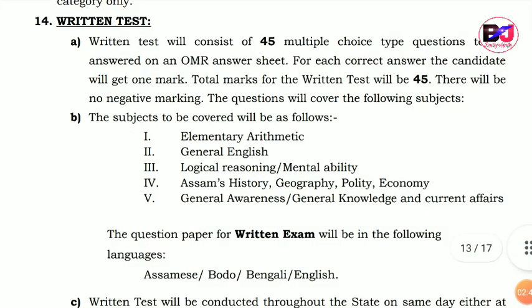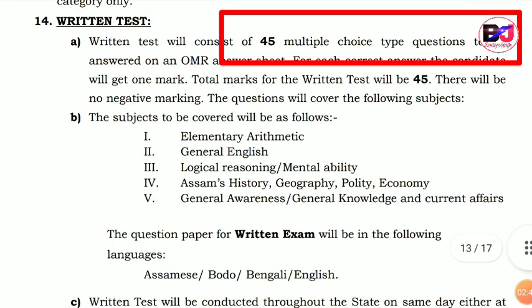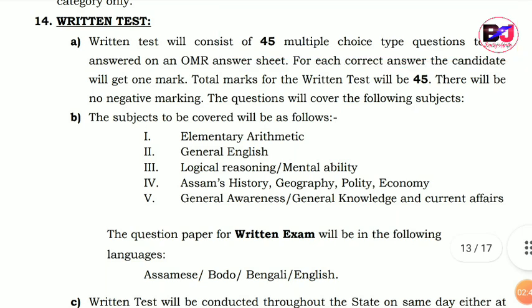This exam is completed by the number of 45 times. If you have any exams, you will have a number of 0-1 numbers and 45 questions. If you have a number of 90, you will have 90 marks. You will have maths, English, reasoning, mental ability tests, geography, quality, economy, ziket, and awareness.